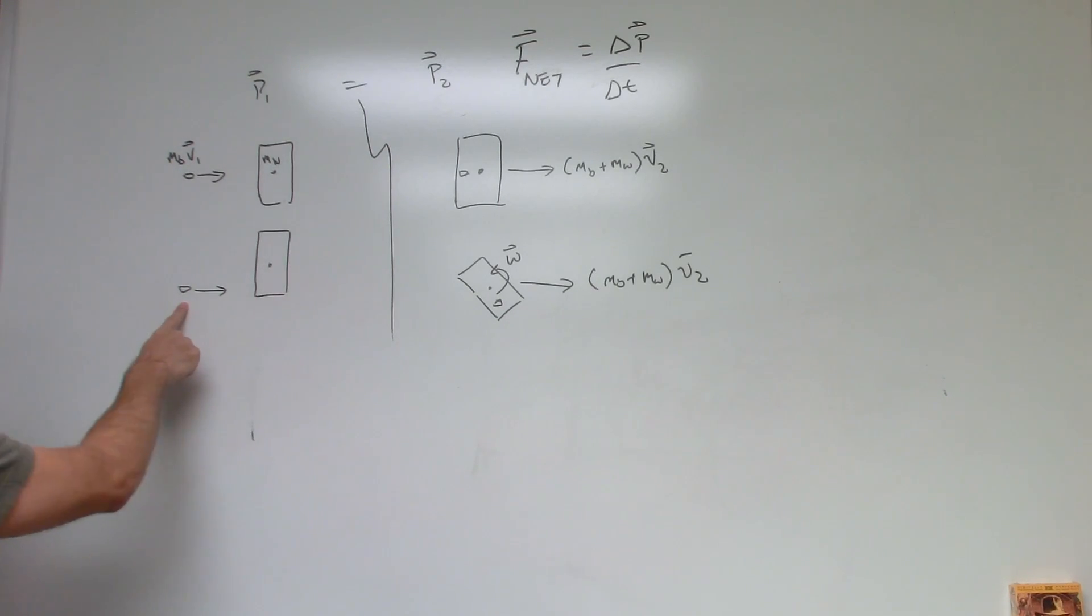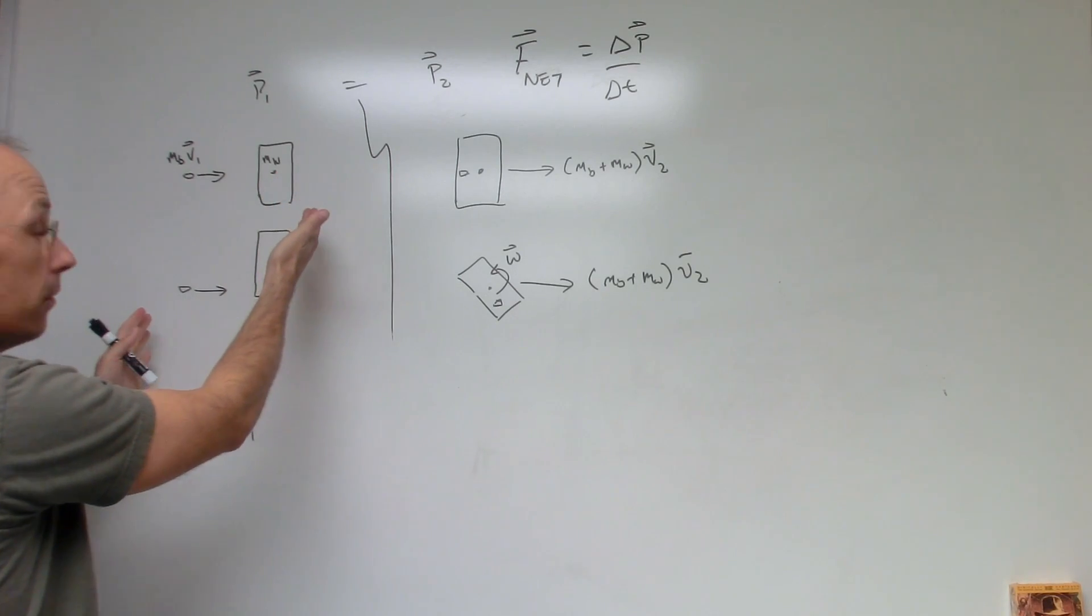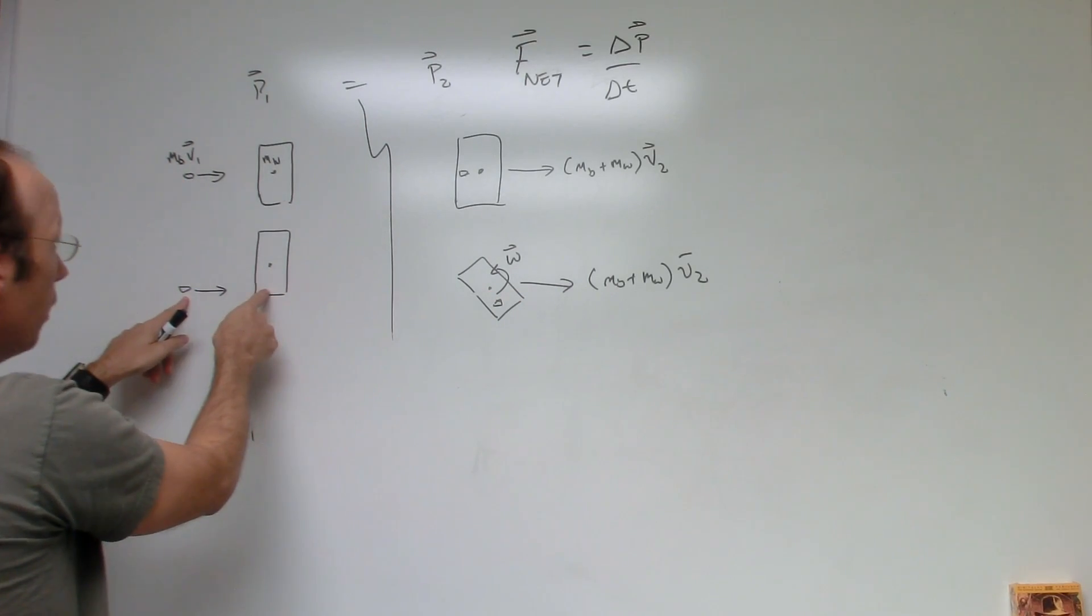Okay, now what if I shoot it over here and hit it at the lower edge? The bullet has the same initial velocity and the same mass. The block has the same mass. So the equations look the same. There's nothing that takes into account the rotation.